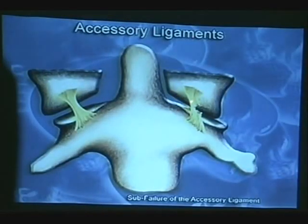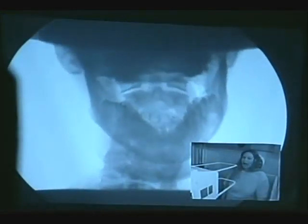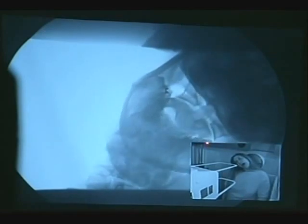Upper cervical ligaments — accessory ligaments hold C1 to C2. C1 is not supposed to hang off C2. Five millimeters. Her head — she said it felt like it wasn't attached. This C1 is hanging off almost five millimeters right there. Headaches all the time, no one can figure out what's wrong. C1 is sloppy all over the place. We can see the patient on camera; we send the tape in and they pay the bills or settle the case.